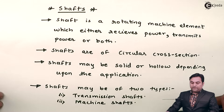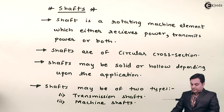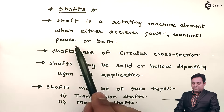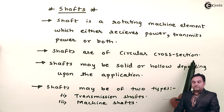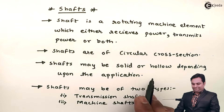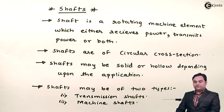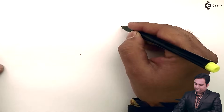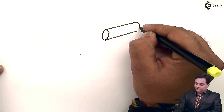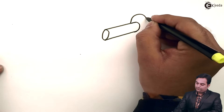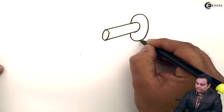To summarize: a shaft is a rotating machine element which either receives power, transmits power, or both. Shafts are of circular cross-section, may be solid or hollow, and may be of two types — transmission shafts or machine shafts. Now I'll draw a diagram to explain how the shaft looks. Since it is a rotating machine element, it would be supported in some member called a bearing.